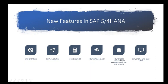SAP also introduced a new implementation methodology called Activate, among other methodologies. The system landscape has significantly changed as well. SAP S4 HANA now offers three deployment options: on-premise, cloud, or hybrid. On-premise means companies install and manage the application server and all infrastructure themselves, while cloud means the system runs on SAP data centers or third-party infrastructure accessible to users.